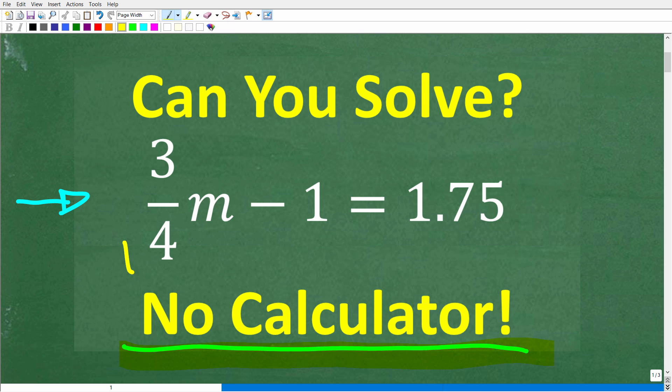All right, so the actual equation is 3/4 m - 1 = 1.75. Once again, no calculators. But if you think you know the answer, put that into the comment section. I'll show you the correct solution in just one second. Then, of course, I'm going to show you exactly how to solve this equation without a calculator.